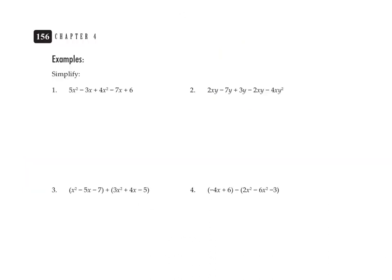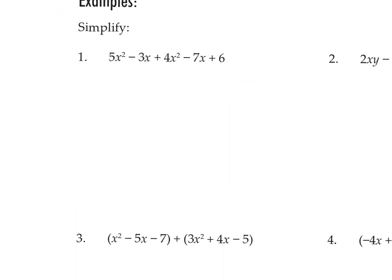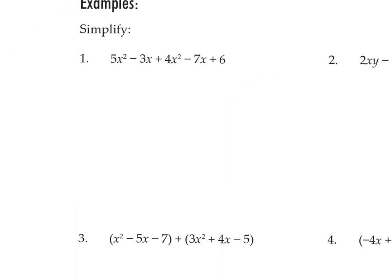We have six examples on this page that we're going to go through, adding and subtracting polynomials. The directions just say simplify for all these examples. In number 1, we just combine like terms: 5x² plus 4x² makes 9x². Then negative 3x and negative 7x make negative 10x. And the constant term at the end is plus 6.